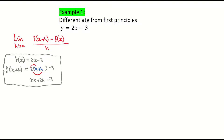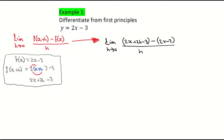Now I'm going to fill that into the formula. Starting with the limit as h approaches 0, f of x plus h is 2x plus 2h subtract 3, then subtract f of x, which is 2x minus 3, all divided by h. On the next line, I'm going to multiply the minus into the second bracket — imagine there's a 1 in front of it, so multiplying in minus 1 gives 2x plus 2h minus 3, minus 2x, and minus 1 times minus 3 gives plus 3, all divided by h.